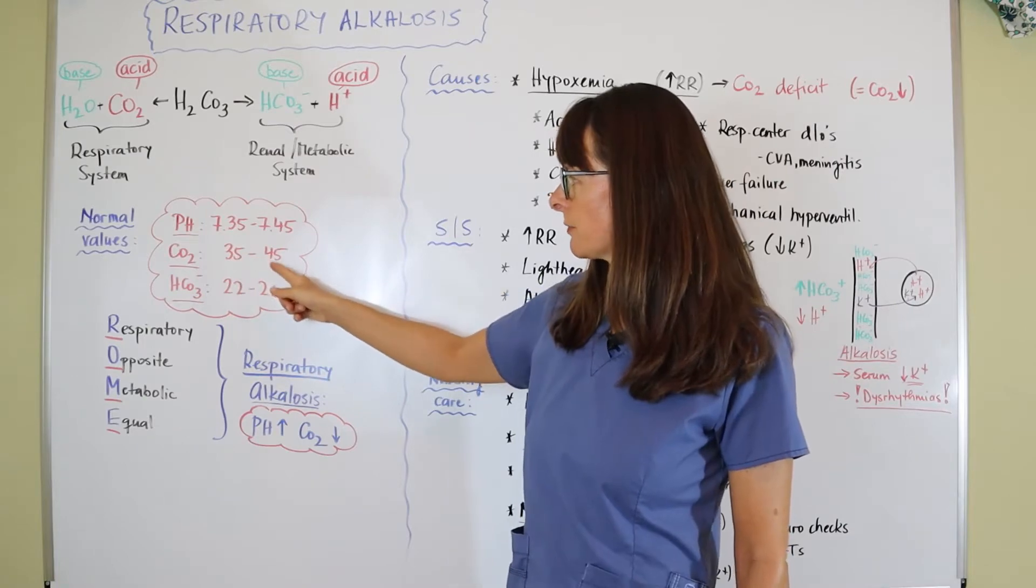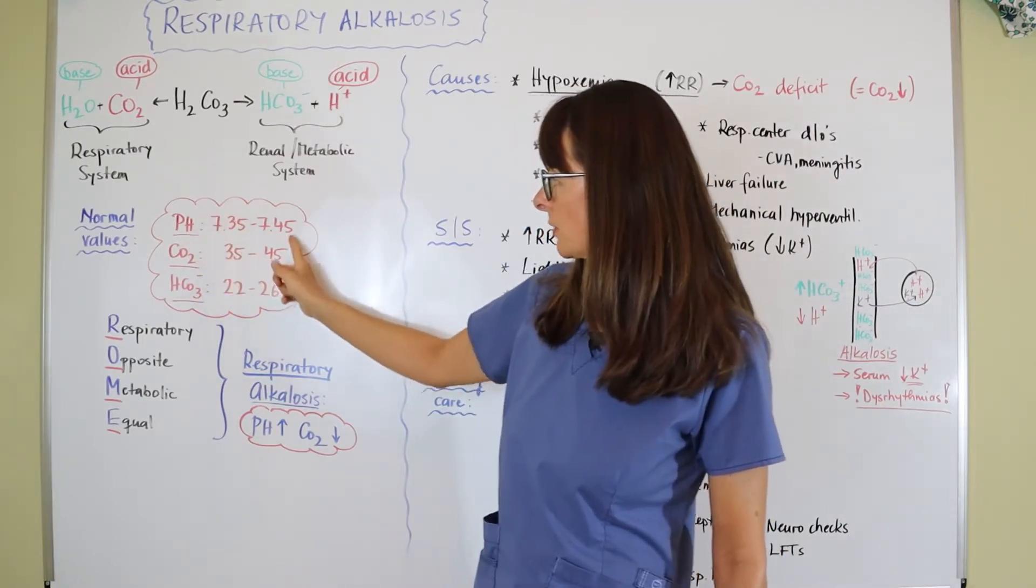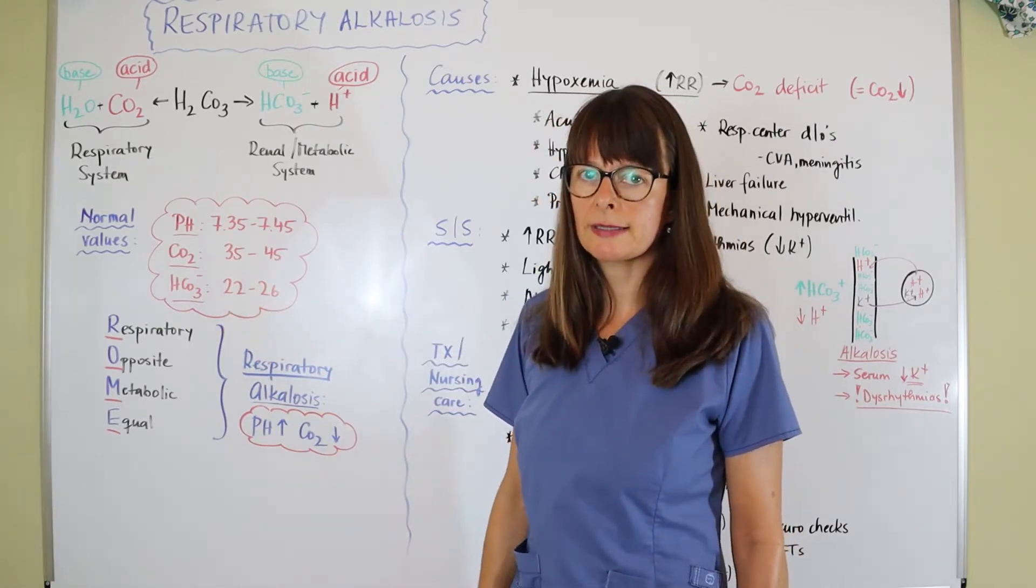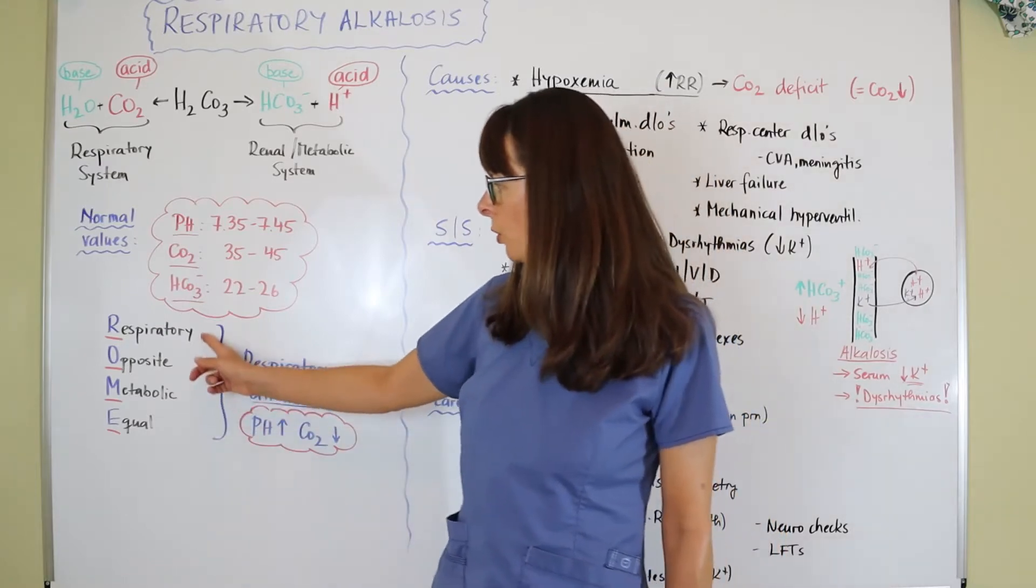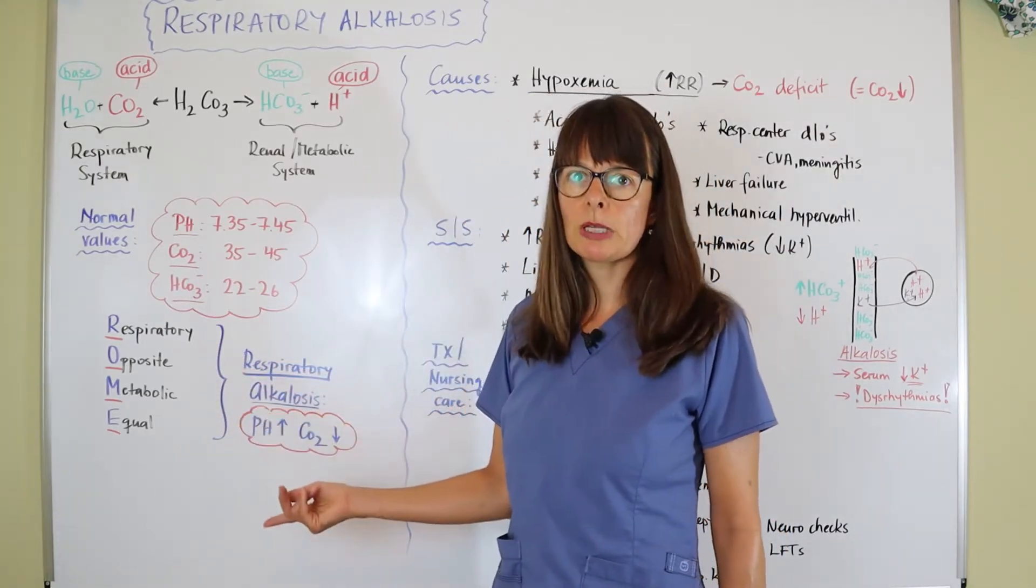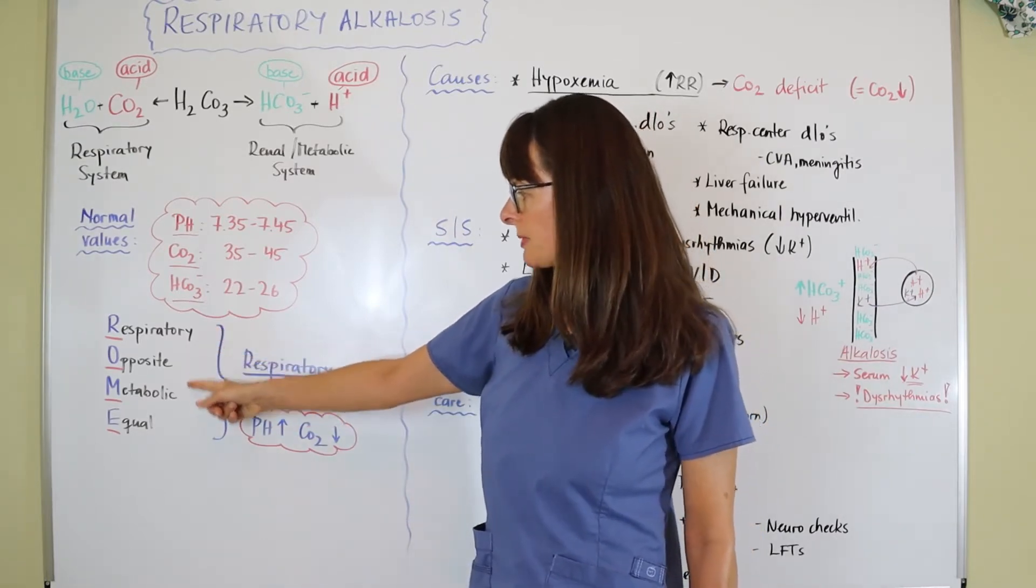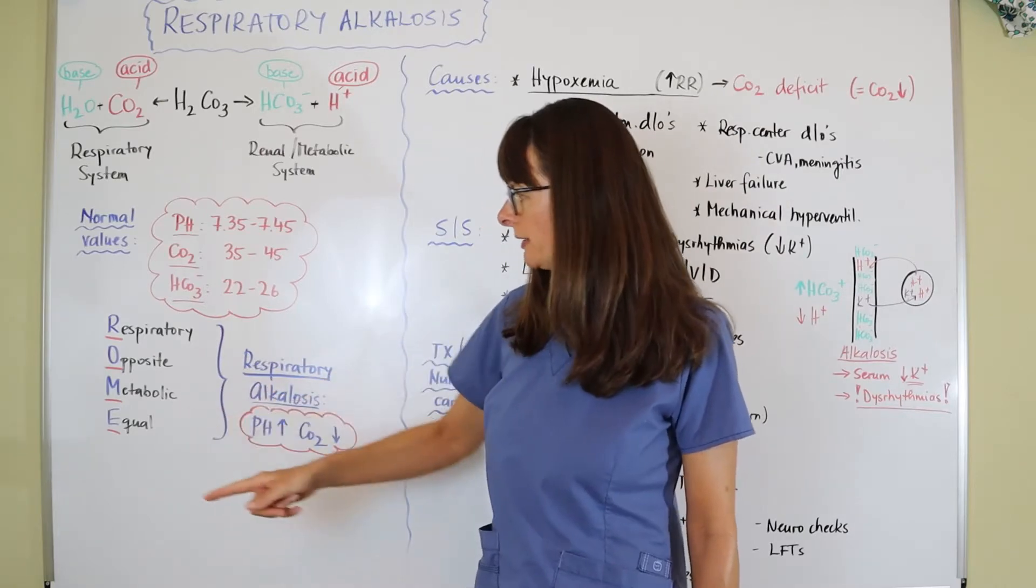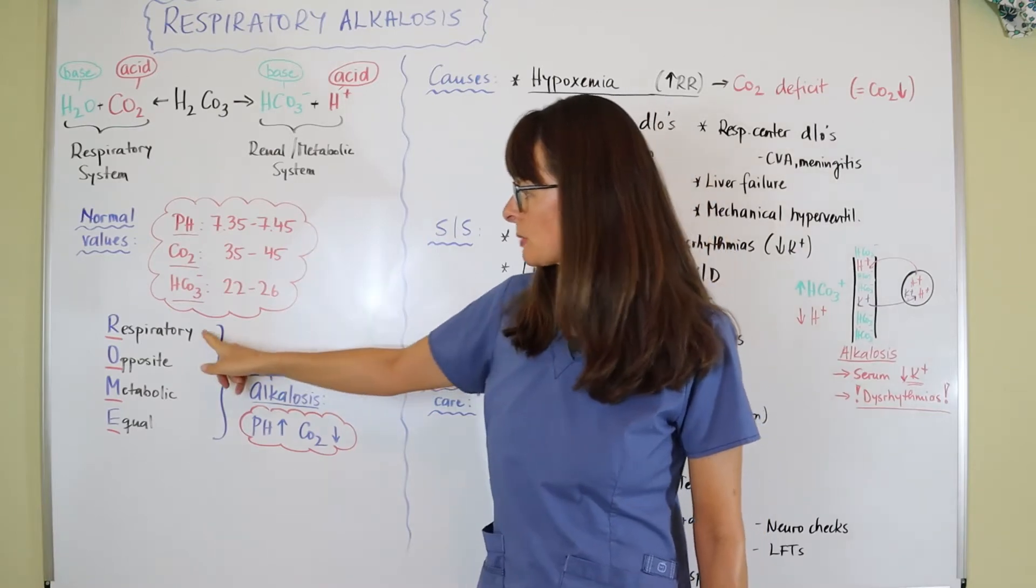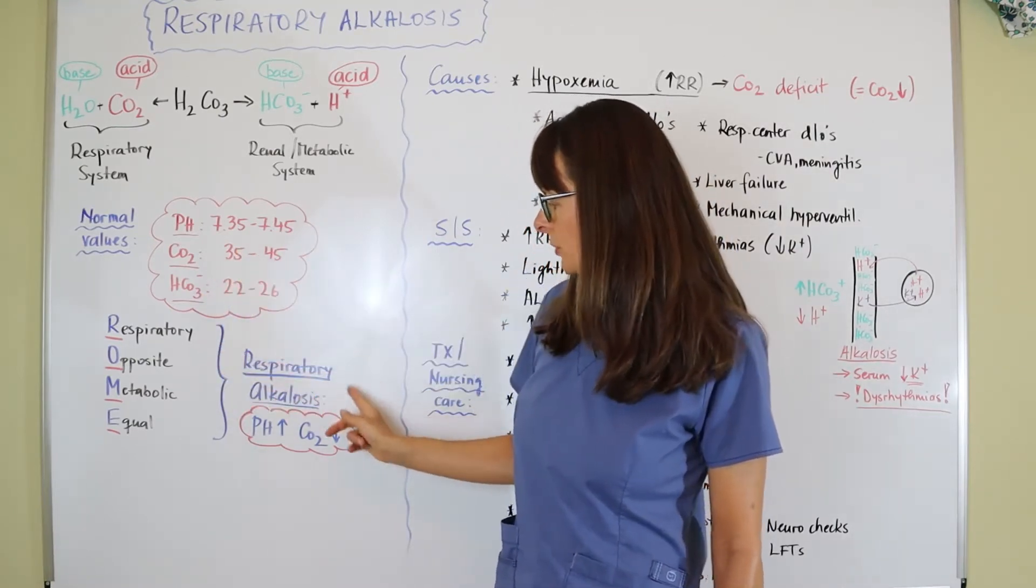The normal values: pH is 7.35 through 7.45, CO2 is 35 through 45, and bicarbonate normals are 22 through 26. This acronym ROME is very important and easy to remember when it comes to ABG interpretation because it stands for Respiratory Opposite, Metabolic Equal, and that refers to the pH.